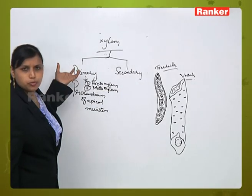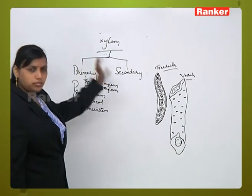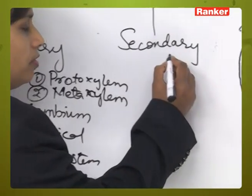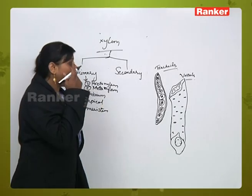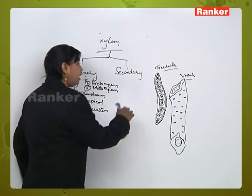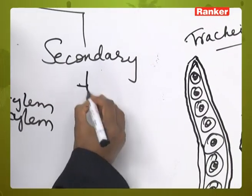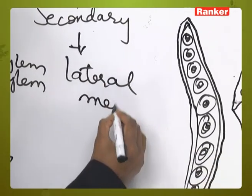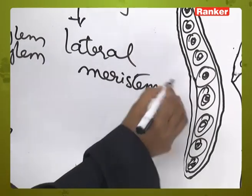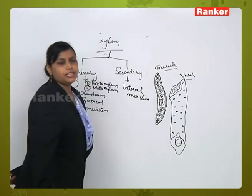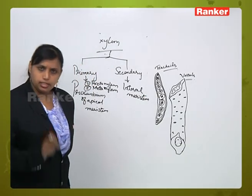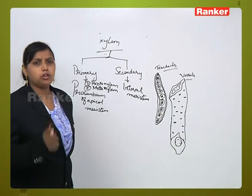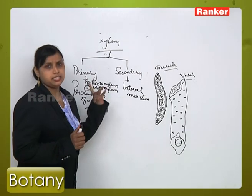We will talk later what is protoxylem and metaxylem. Another one is secondary xylem. If the initiation of xylem tissue occurs from the lateral meristem, then that type of tissue is called secondary xylem.